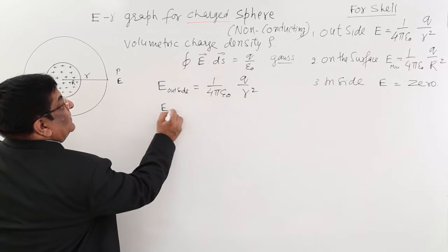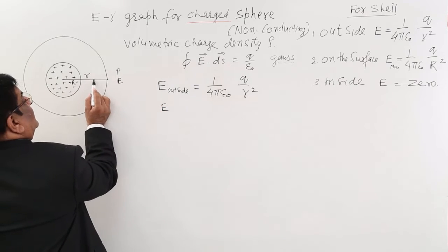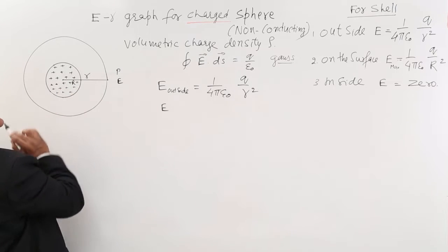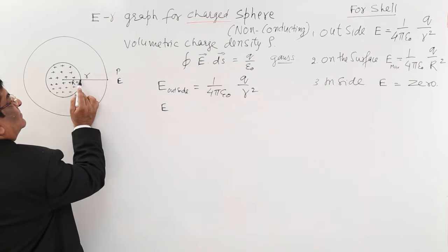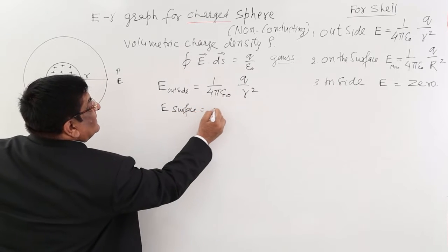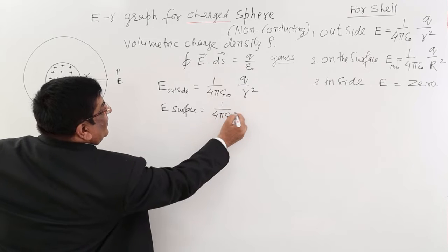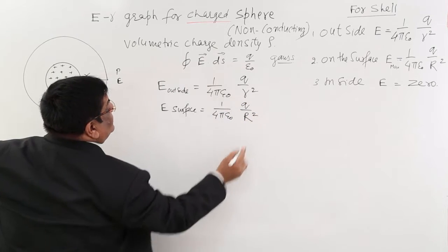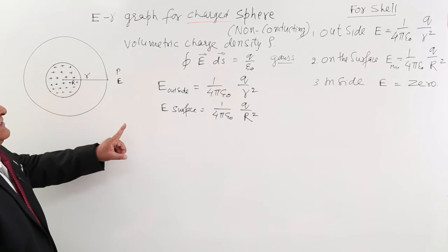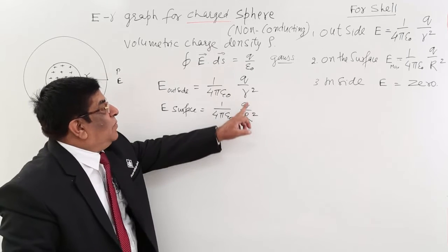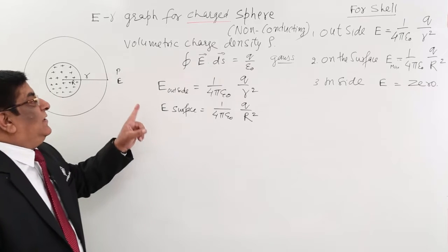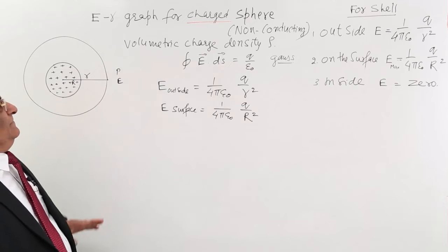Now when we go on decreasing this R, this will attain a value of R when the point P is here on the surface. This is 1 upon 4 pi epsilon 0 Q upon R square. Now this R is smaller than this R, therefore this E is larger than this E. So E goes on increasing towards the surface.